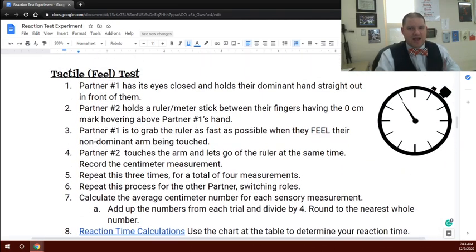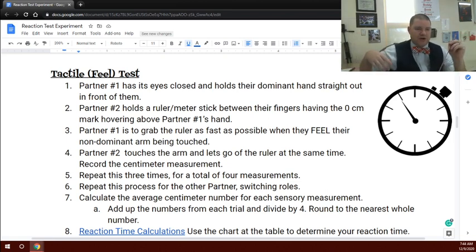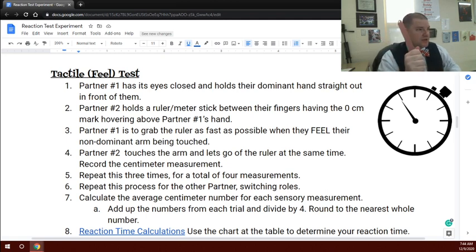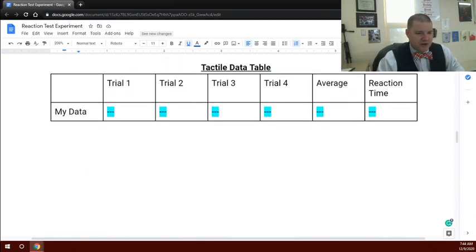We've got our tactile field test then. Partner one's still going to hold the ruler out in front of them. Instead of sight or hearing, you're going to close your eyes. You're going to hold your hand out in front of you, and then they're going to tap you on the shoulder. As soon as they tap you on the shoulder, they're going to release it, and then you're going to catch it. So they're going to drop and tap your shoulder at the same time. That gets the triggering for the sensory nerves to go all the way up to your brain and back down to trigger the grasping of the ruler. You'll do your reaction time calculations down below there and get your reaction time.